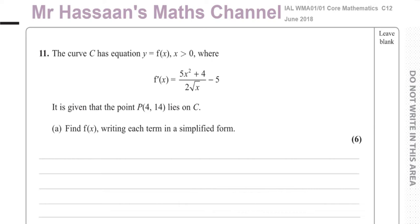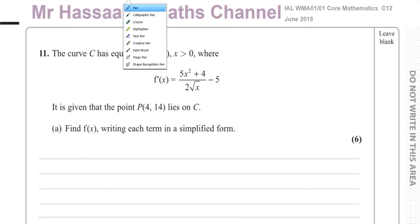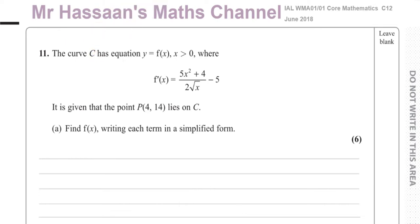This question here is about integration. It says a curve C has equation given by y equals f of x, where x is greater than 0, and f dash of x is equal to 5x squared plus 4 over 2 root x, minus 5. We know that the point P, which is (4, 14), lies on C. We have to find the original function f of x, writing each term in simplified form.